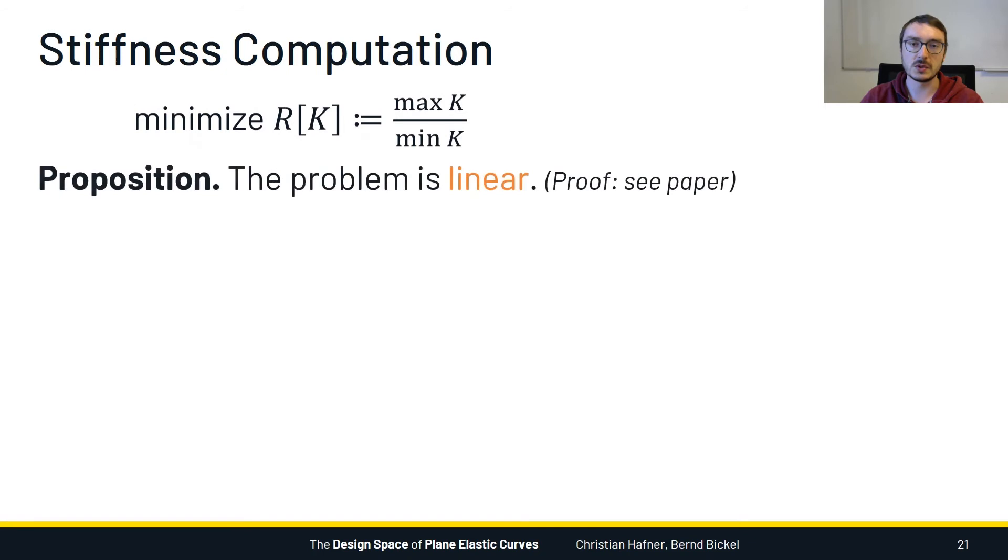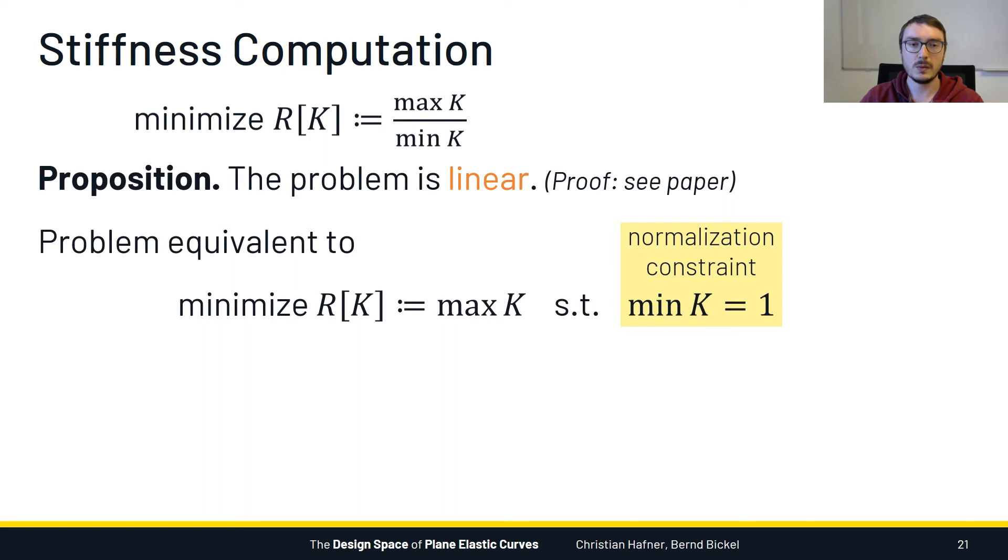Let's take a look at how to solve this optimization problem. It turns out that even though the objective is a fraction of two linear functions, the problem itself is actually linear. The reason is that we can show that the objective function is invariant under rescaling. This allows us to introduce a normalization constraint without actually changing the problem. The most convenient choice here is to say that the minimum of K equals 1. Then what we are left with is a linear objective function with an affine constraint, which gives us a linear problem overall.